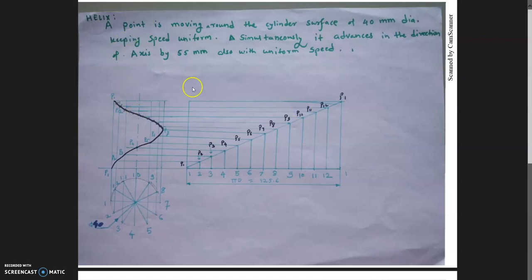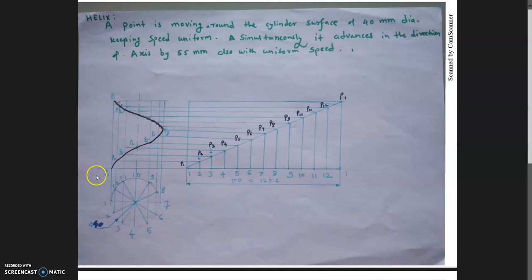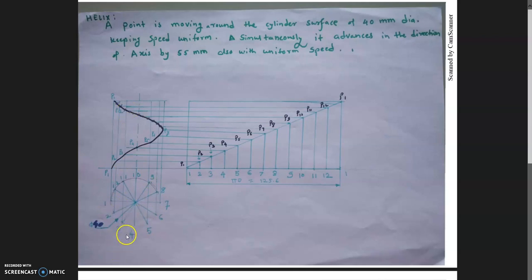First we will see helix on cylinder. The question given here: a point is moving around the cylinder surface of 40 mm diameter, keeping speed uniform. Simultaneously it advances in the direction of the axis by 55 mm, also with uniform speed. So the axis height is 55 mm and base diameter is given.